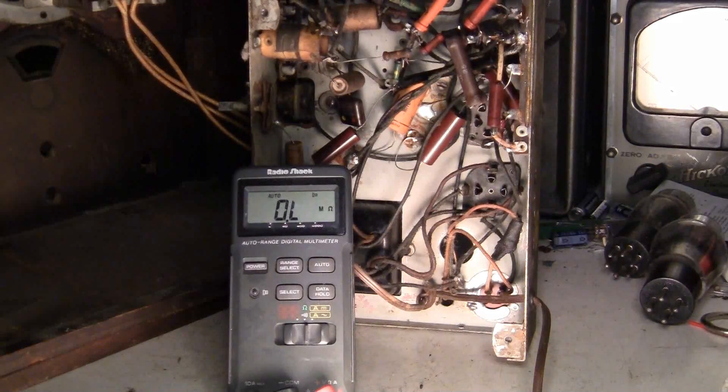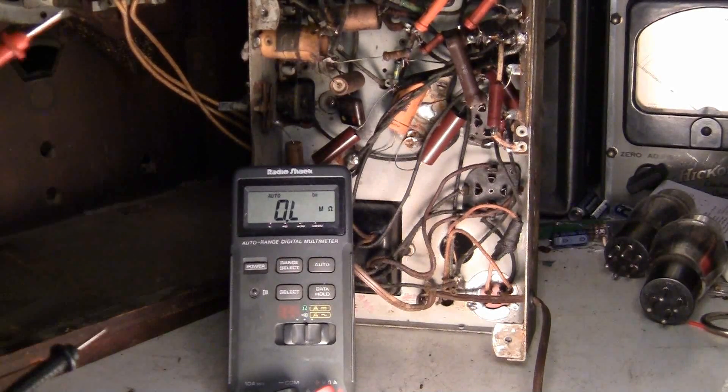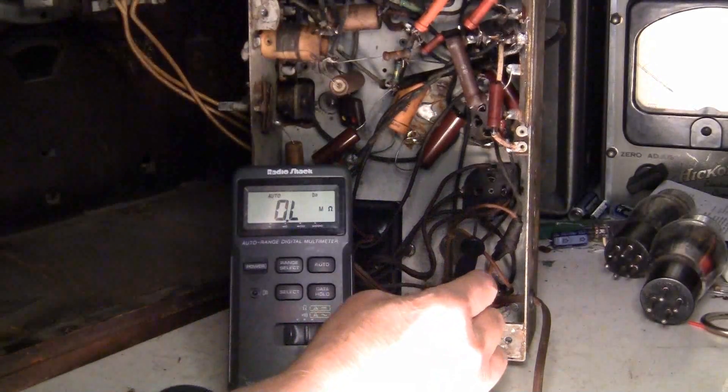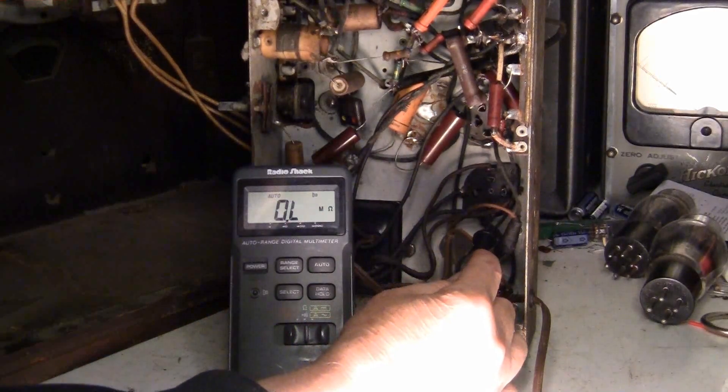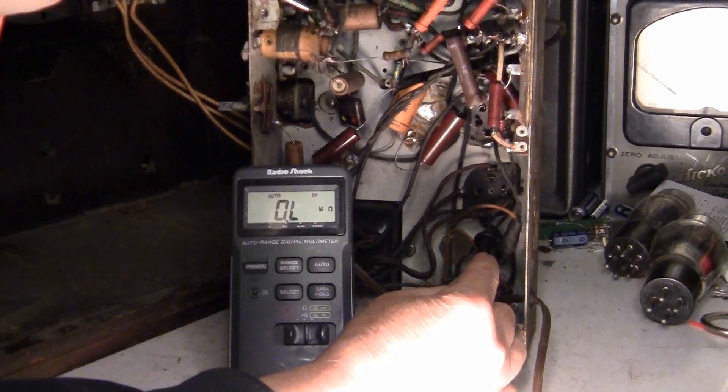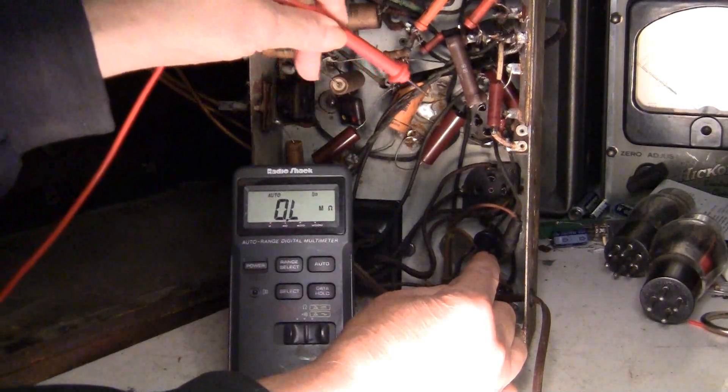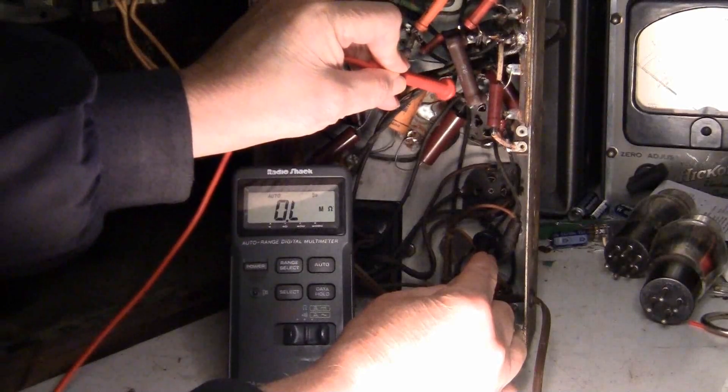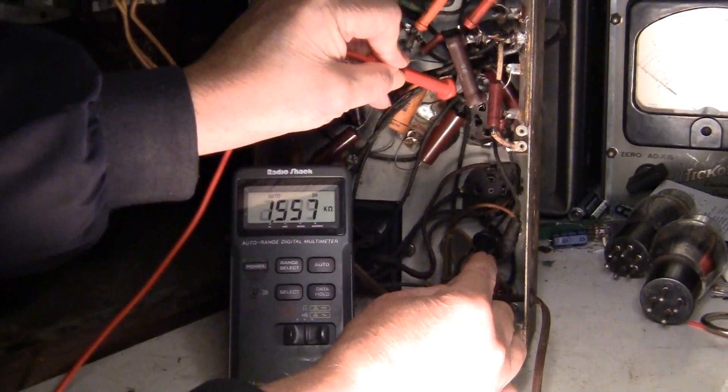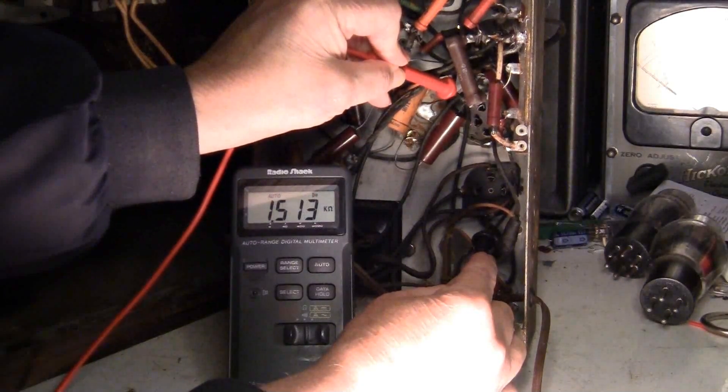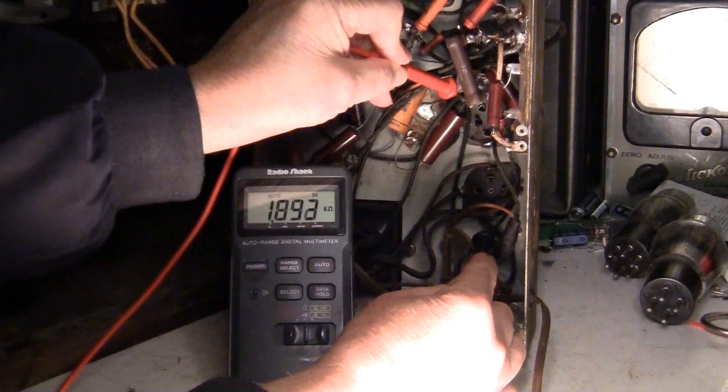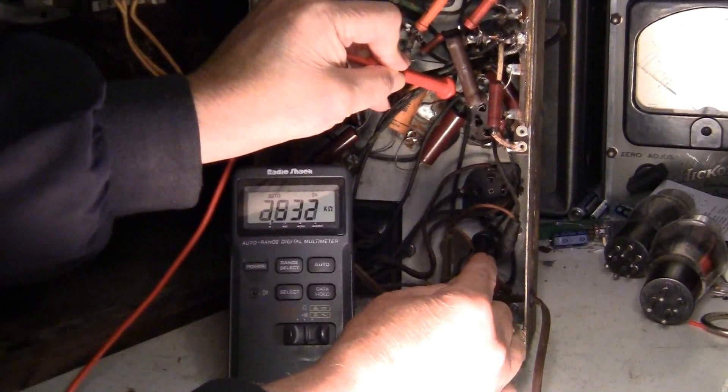Now we're going to test the field coil and the primary of the audio output by putting an ohmmeter on pin 4 of the 80 and pin 2 of the 42. About 1500 ohms, so it appears that both of those are good.